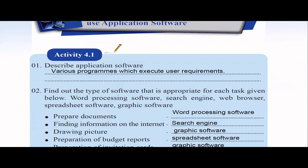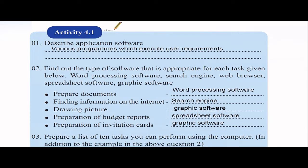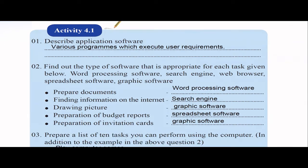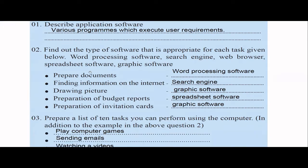It's not mandatory to have application software — it's based on user requirements. You can install any number of application software based on your need. Next, find out types of software appropriate for each task given. They have given examples like word processing software, search engine, web browser, spreadsheet software, and graphic software. To prepare documents, we use word processing software like Microsoft Word.